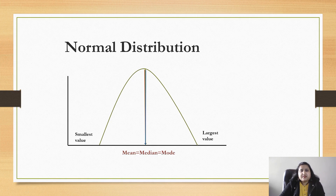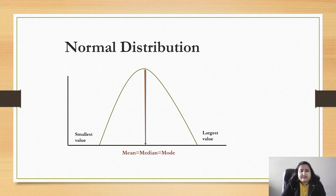Before discussing skewness and kurtosis, we should first briefly understand what is normal distribution. Normal distribution is a bell-shaped curve which is symmetric around the central line. The distribution is symmetric around the central line, and in a normal distribution, mean is always equal to median, which is always equal to mode.